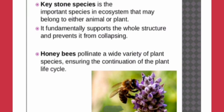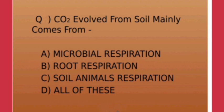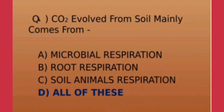The next question is: carbon dioxide evolved from soil mainly comes from which of the following factors? The options are microbial respiration, root respiration, soil animals respiration, or all of these. The correct option is option number D — all of these — because CO₂ is evolved from soil due to microbial respiration, root respiration, and also respiration by soil animals.